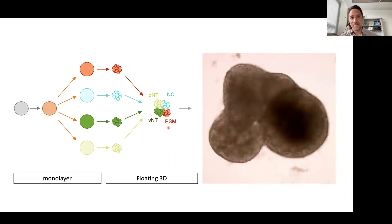We're not sure exactly what to call these things. This is a work in progress. But at least for today, I'm going to call these things PAXAs for posterior axial assembloids.